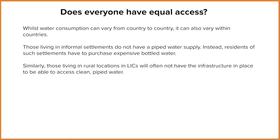Those living in informal settlements — what we call shanty towns or squatter settlements — don't have piped water supplies at all, because they're illegal settlements. They haven't been built or sanctioned by the government, so they have no access to piped water, electricity, or anything like that. Instead, residents would have to purchase bottled water or find other sources, again probably local rivers. But because informal settlements are mostly inside urban areas, those rivers are almost guaranteed to be polluted.